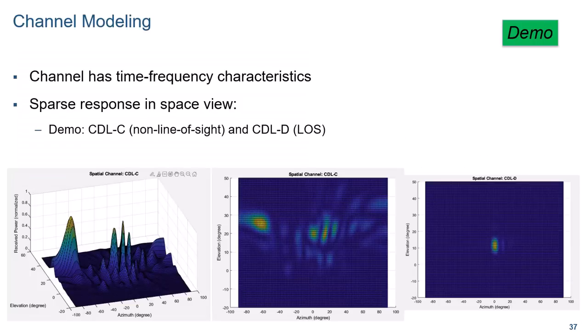This leads to the next part of this presentation where we discuss the codebooks defined in the standard. It may seem strange to start this discussion with a view of the propagation channels, but channels are at the heart of the decisions made for codebooks and reporting. You can look at a propagation channel in time and frequency, but you can also look at it in space. 3GPP defines several channel models called cluster delay lines, or CDL, as representative of conditions that will be experienced in 5G deployments. Some profiles are non-line of sight — profiles A, B, and C — and the others, D and E, are line of sight.